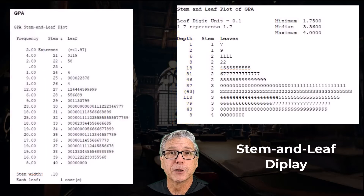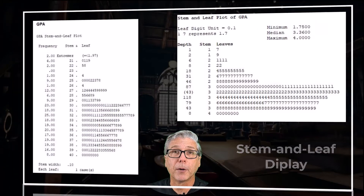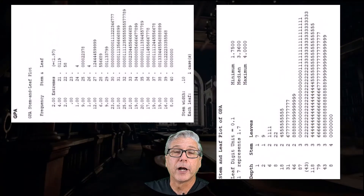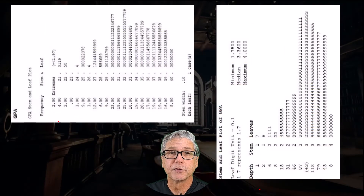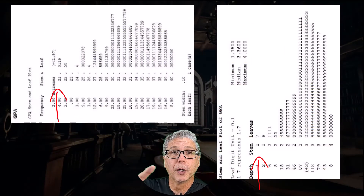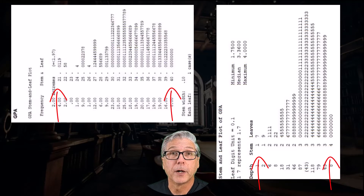The stem and leaf display can also show the shape of the data simply by rotating the graph 90 degrees. You're going to rotate the graph to put the smaller numbers on the left hand side and the larger numbers on the right hand side.